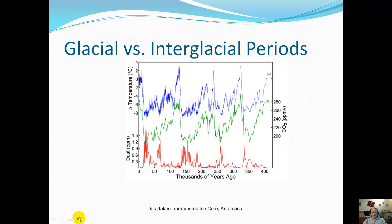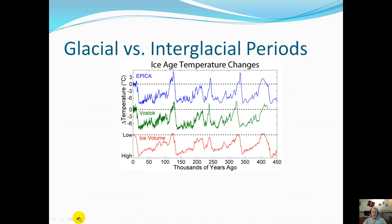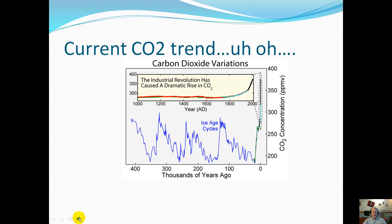These next couple slides talk about temperature from different glacial periods. The more times we look at different types of data, the better off we are. And of course, we always go back to climate change — the amount of CO2 getting into the atmosphere — and you can see it definitely through the industrial revolution. Also remember that volcanic eruptions throw a whole bunch of CO2 into the atmosphere.